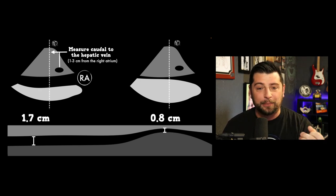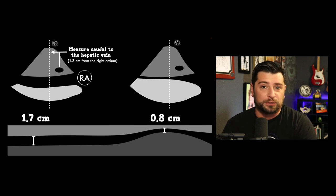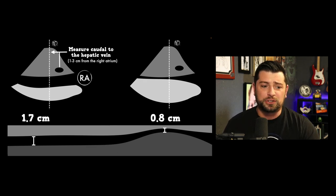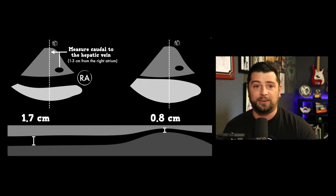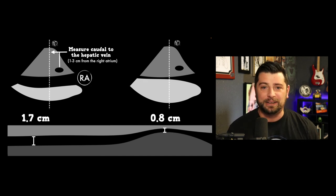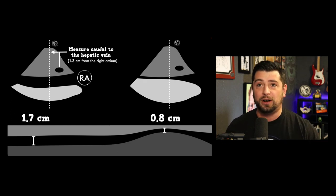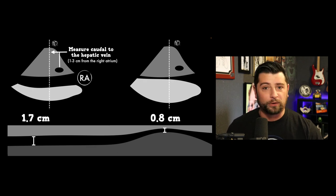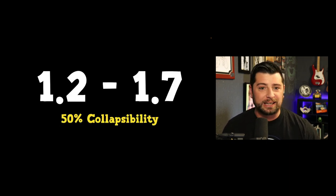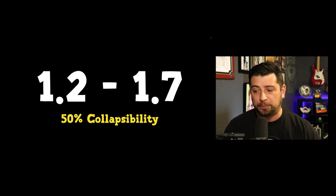If you see a heart that's hyperdynamic and beating well — looks like it could use some volume — and then you look at the IVC and see good collapsibility, that's a patient that volume isn't going to hurt. However, if the blood pressure looks good and the heart rate is around 80-100, and you look at the IVC and it's collapsing, that doesn't mean you have to give volume. A collapsing IVC is just the sign of a very efficient system, a low right atrial pressure. A textbook will say IVC diameter should be 1.2-1.7 cm at its thickest with 50% collapsibility.